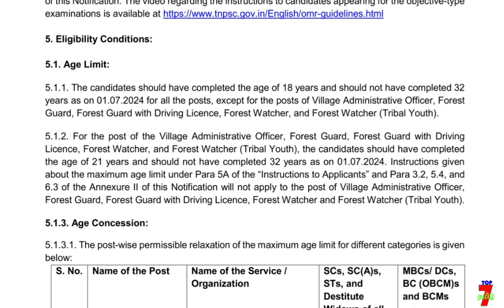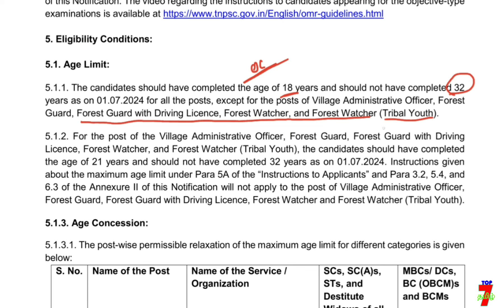If you choose age limit, you can choose the maximum age limit. The minimum age limit is 18. Maximum age limit is 32. If you choose the age limit, you can choose Forest Guard with Driving License, Forest Watcher, or Tribal Youth. The minimum age limit for these is 21.